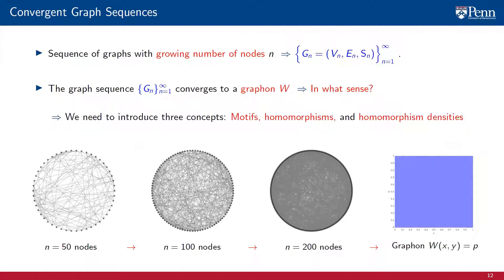To understand convergence of graph sequences to graphons, we have to begin with the introduction of three concepts: motifs, homomorphisms, and homomorphism densities.